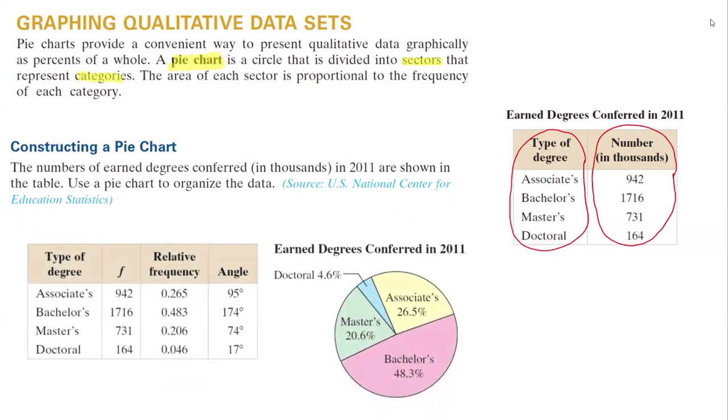On the left-hand side, I have type of degree. The frequency for associate degree is 942. So the relative frequency, which is 942 divided by the total. How do I find the total?